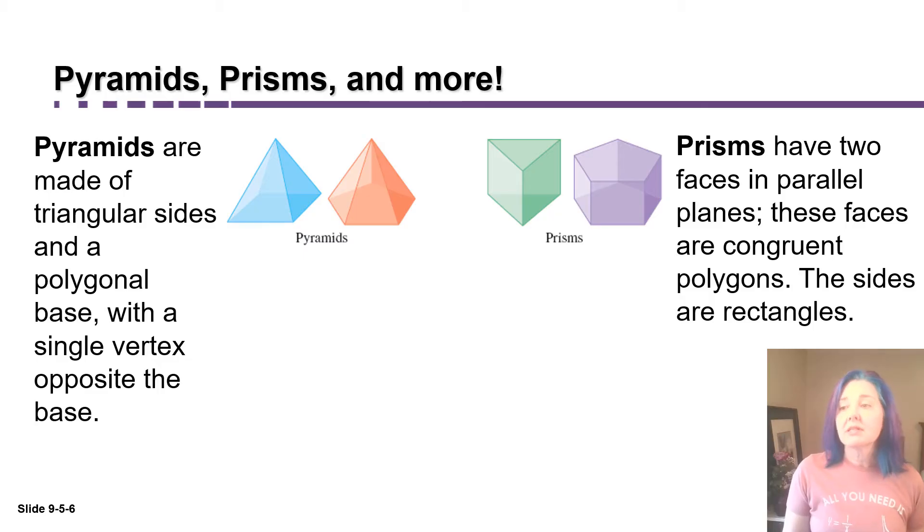We will also be interested in prisms, which have two faces in parallel planes that are the same polygon shape. These faces are congruent to each other. They're the same size and shape. And then the sides of the prisms are all rectangles.